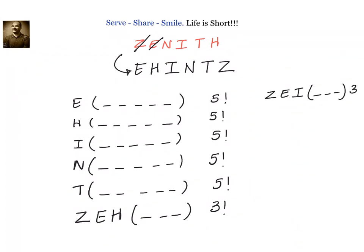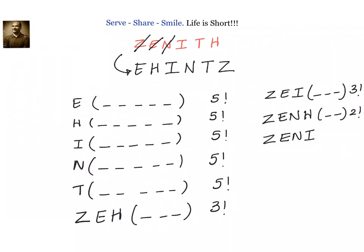After Z-E-I, we have Z-E-N. Once we get N, we strike N off and come back again. So starting with Z-E-N and then H, we have two slots to be filled — that is factorial 2. Once done with Z-E-N-H, after H is I. Strike off I, come back — then Z-E-N-I-H, only one letter left, that is T — so that is 1. The next one is what we want: Z-E-N-I-T-H — one more.